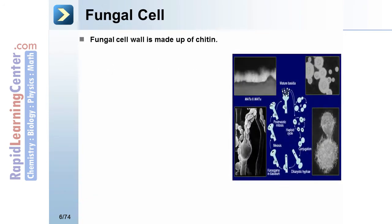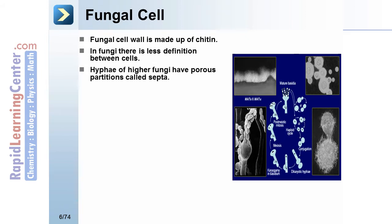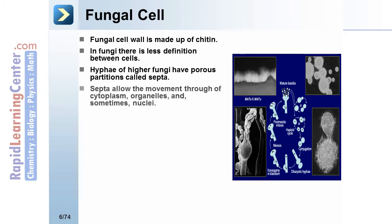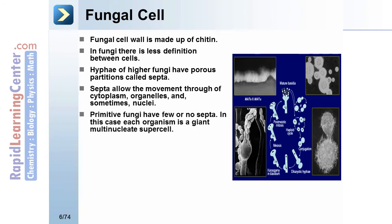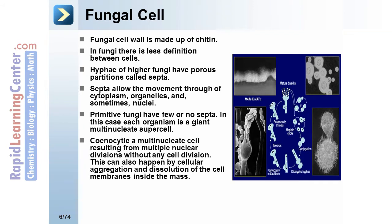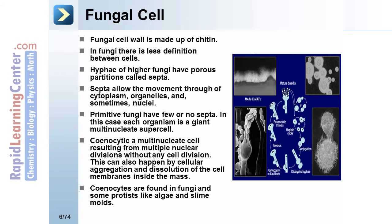Fungal cell walls are made up of chitin. In fungi, there is less definition between cells. Hyphae of higher fungi have porous partitions called septa, which allow the movement of cytoplasm, organelles, and sometimes nuclei. Primitive fungi have few or no septa; in this case, each organism is a giant multinucleate supercell. Coenocytic or multinucleate cells result from multiple nuclear divisions without any cell division, which can also happen by cellular aggregation and dissolution of cell membranes inside the mass. Coenocytes are found in fungi and some protists like algae and slime mold. Some primitive fungi have flagella.